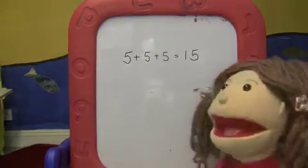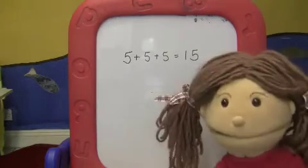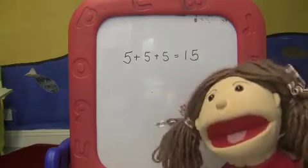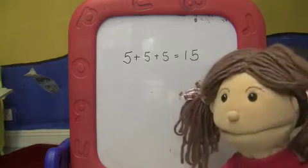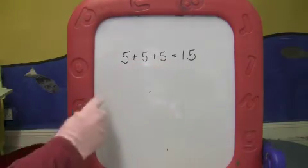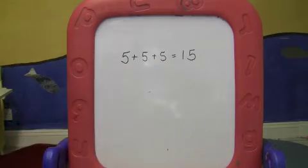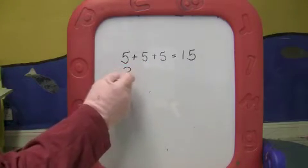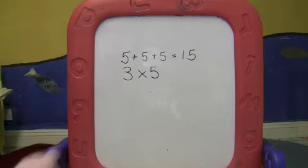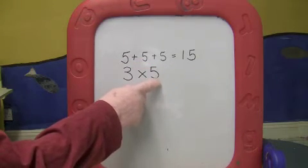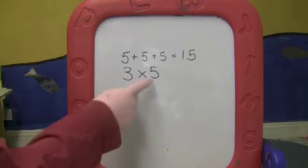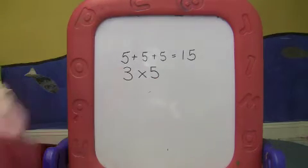Or 3 5s is 15. And we can use 3 5s to write this much more quickly. Let's see how we can do that. 5 plus 5 plus 5 is 1, 2, 3 times 5. So I'm writing 5 3 times. I'm adding 3 5s.